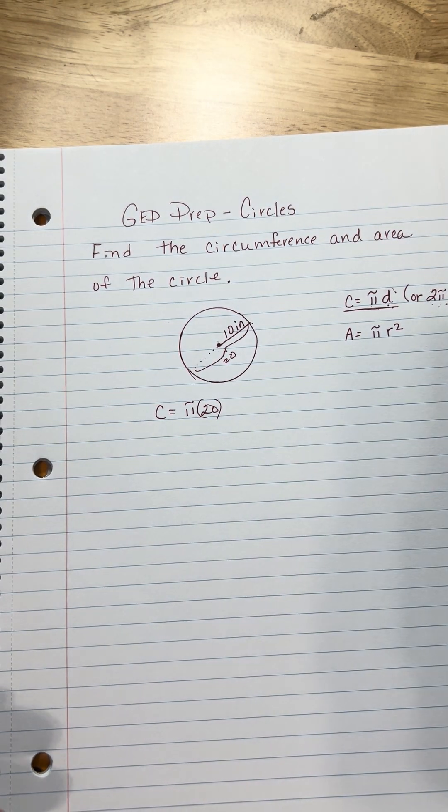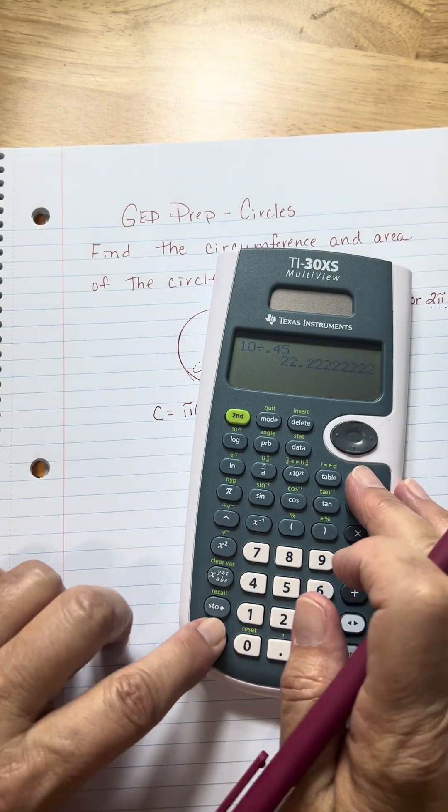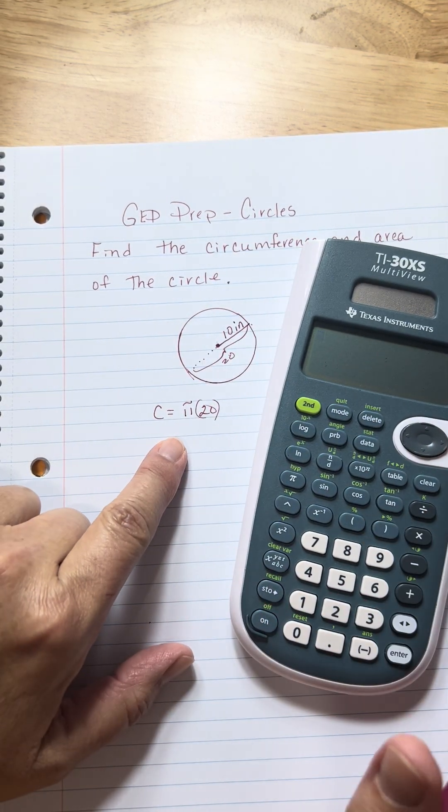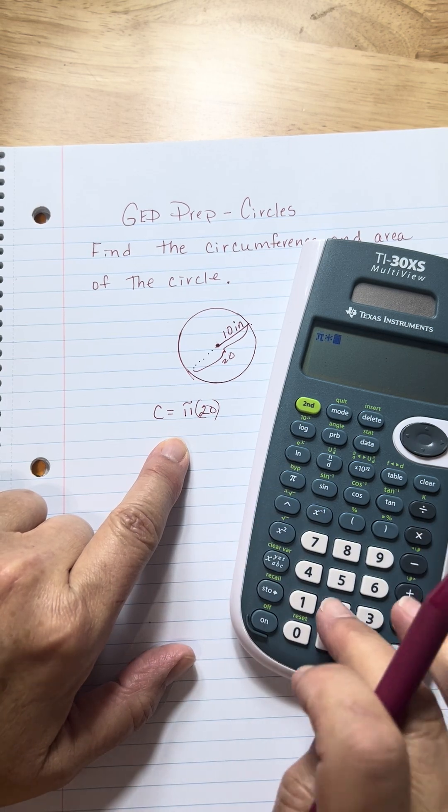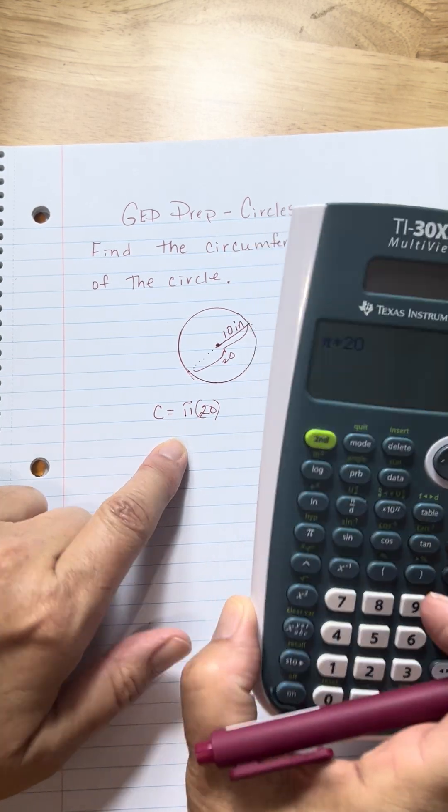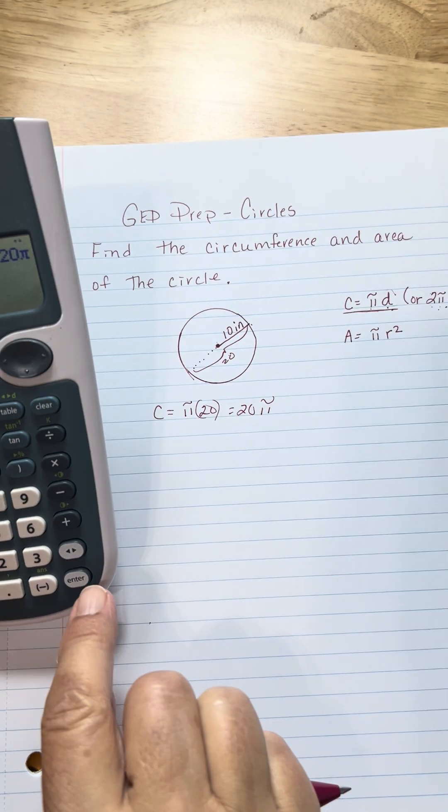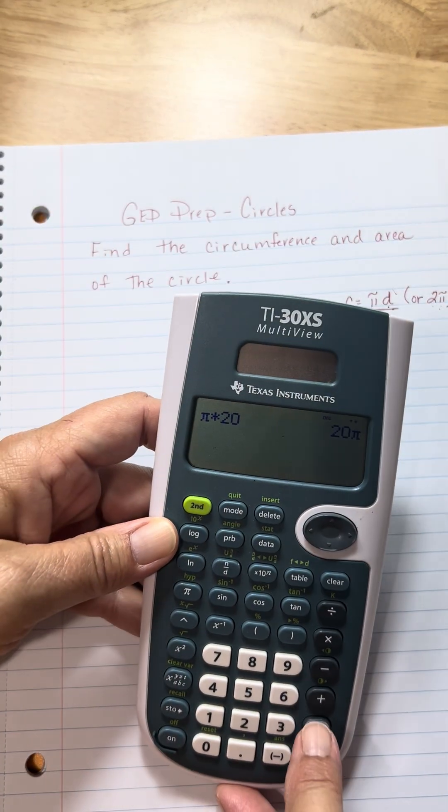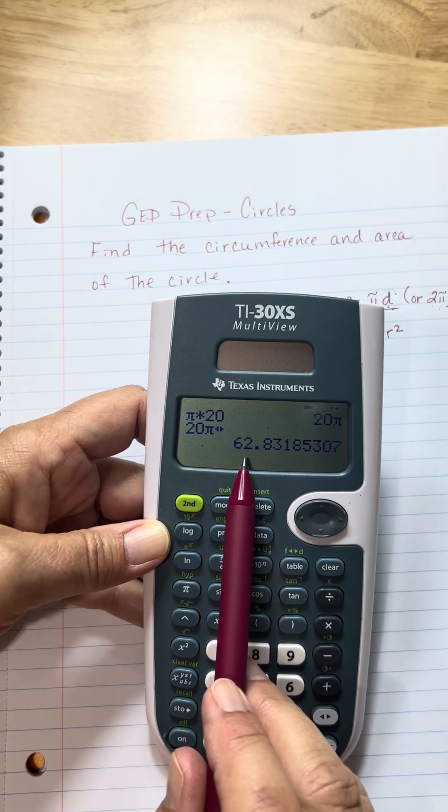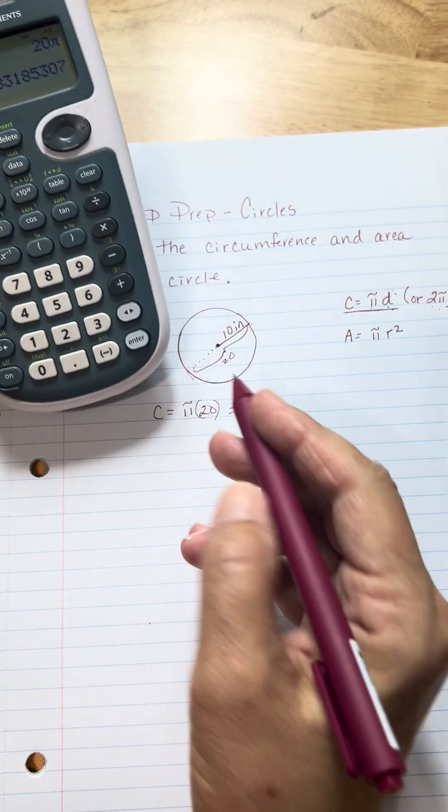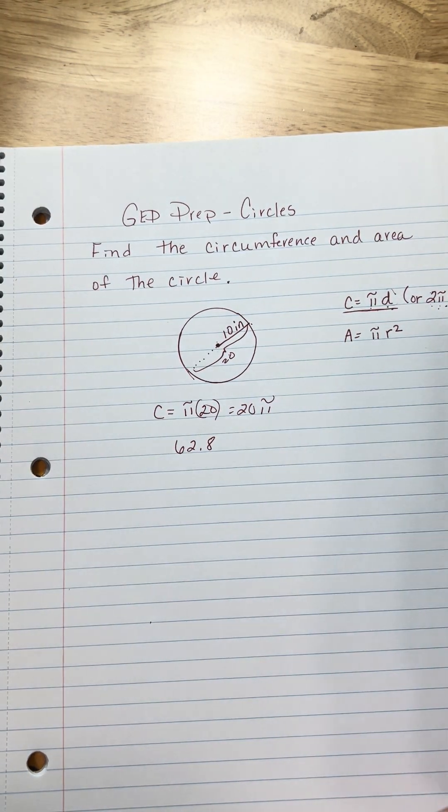Now remember, on the GED, you do get a calculator for this part. So we could multiply. Here's the pi button right here. Pi times 20 gives you either 20π naturally. Now, if you want it in decimal format, you hit the double arrow button down here, and it's going to give you 62.8. And we'll just stop there. Okay, so there's your circumference.